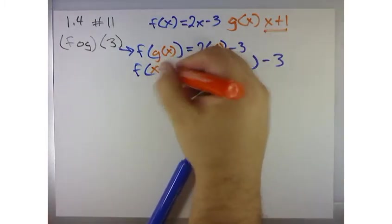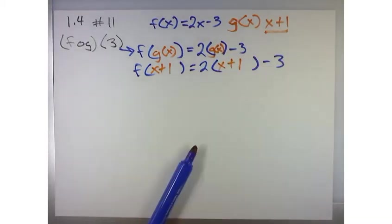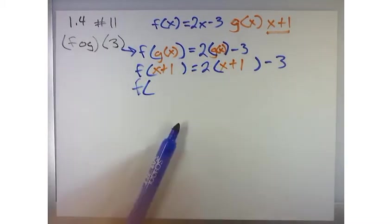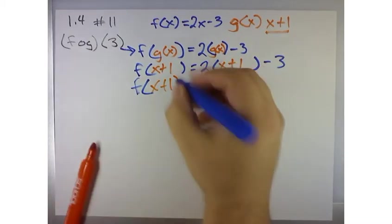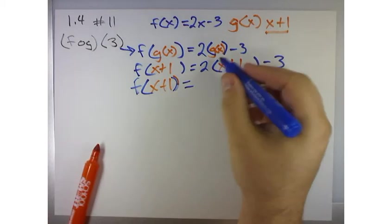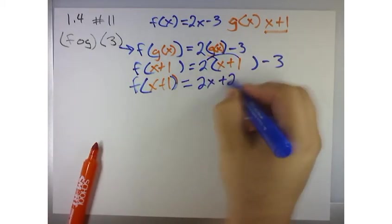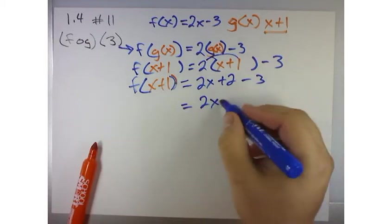Well, g of x is x plus 1. So what I really want is f of x plus 1, which is the same as 2 times the quantity x plus 1 minus 3. So f of x plus 1 equals, distributing through, 2x plus 2 minus 3.